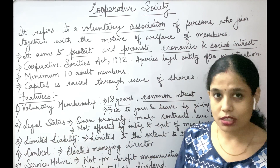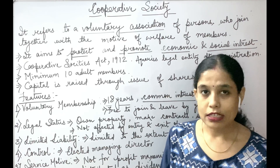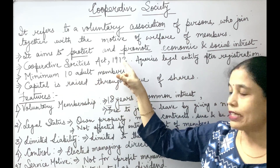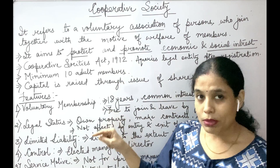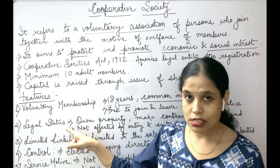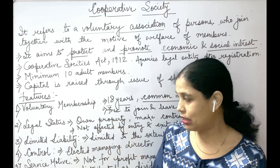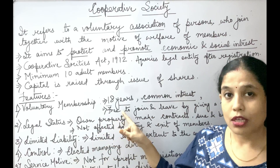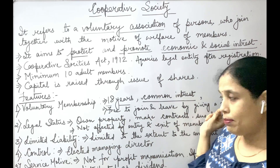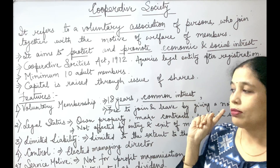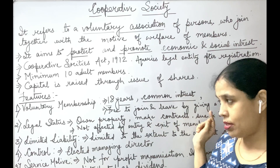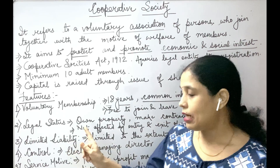The second feature is legal status. It is mandatory for the cooperative society to be registered under the Cooperative Society Act 1912. Once registered, it acquires a separate legal entity. As a result, it can own property in its own name, make contracts, and can sue and be sued by others. The cooperative society is not affected by the entry and exit of its members.